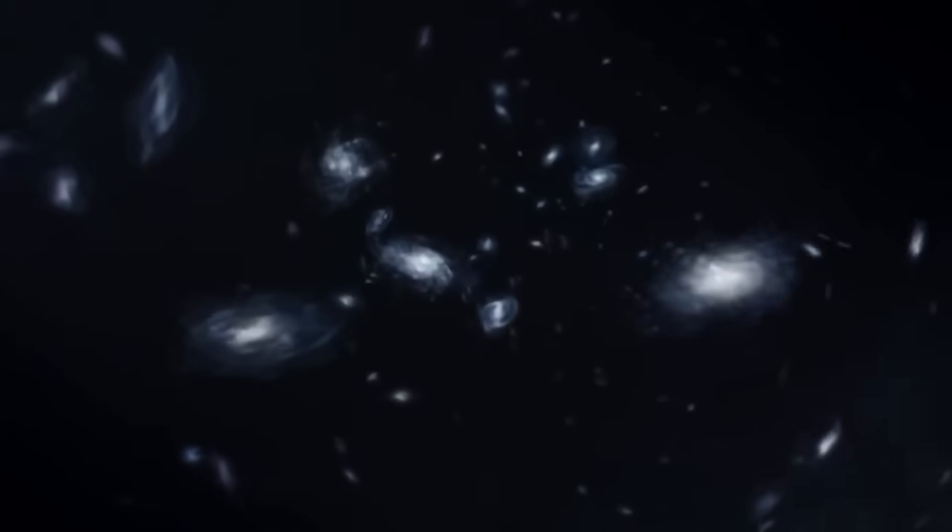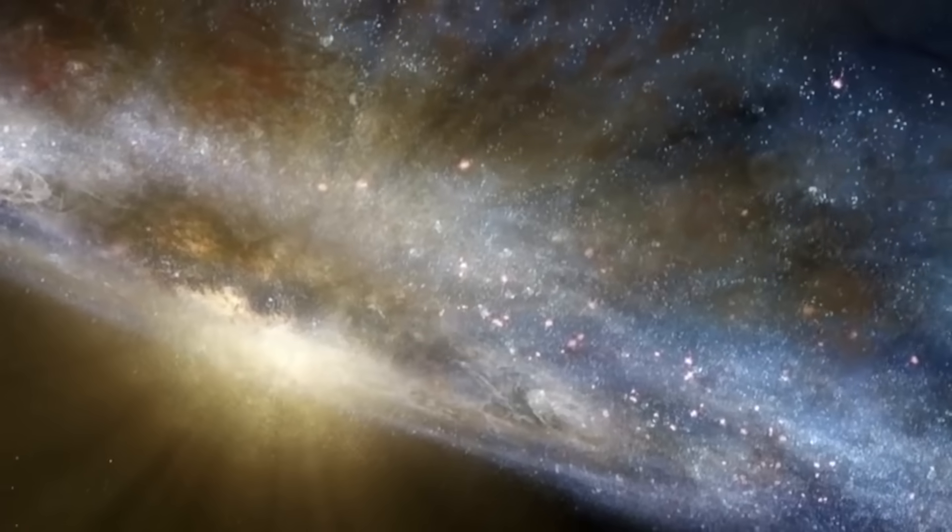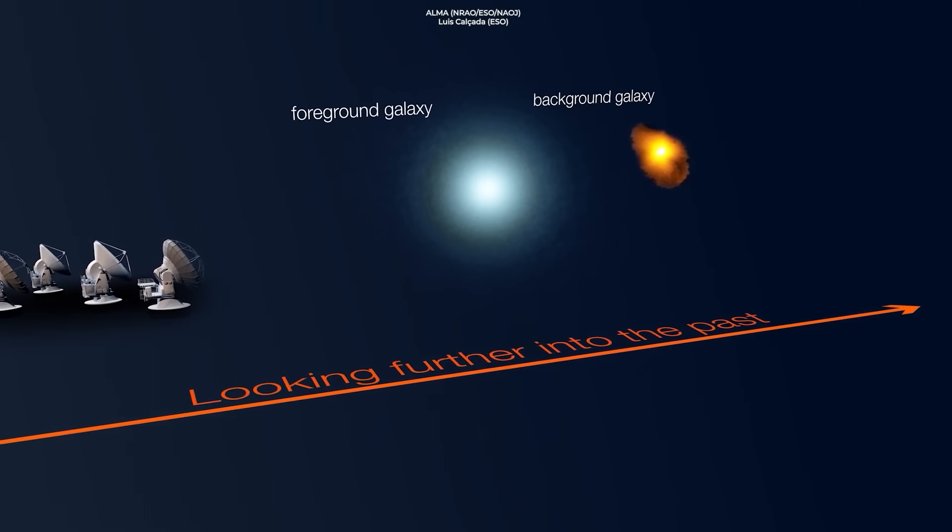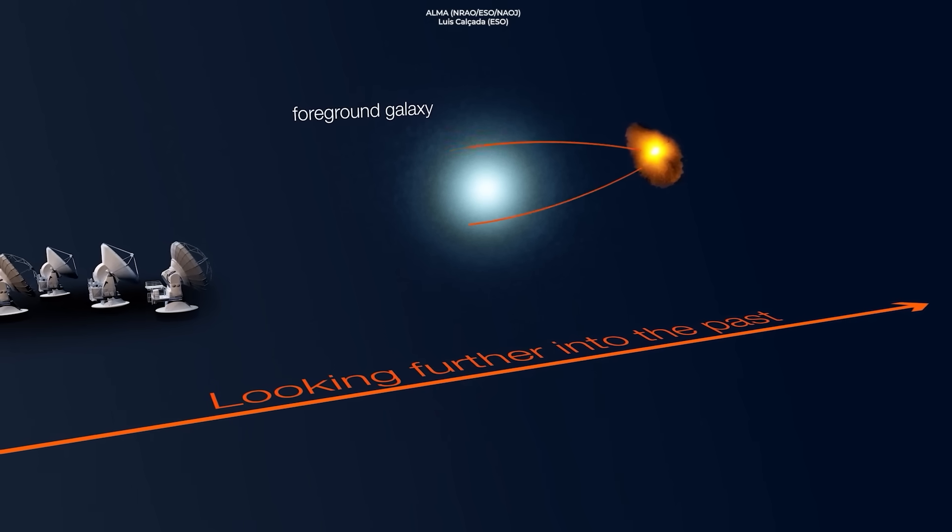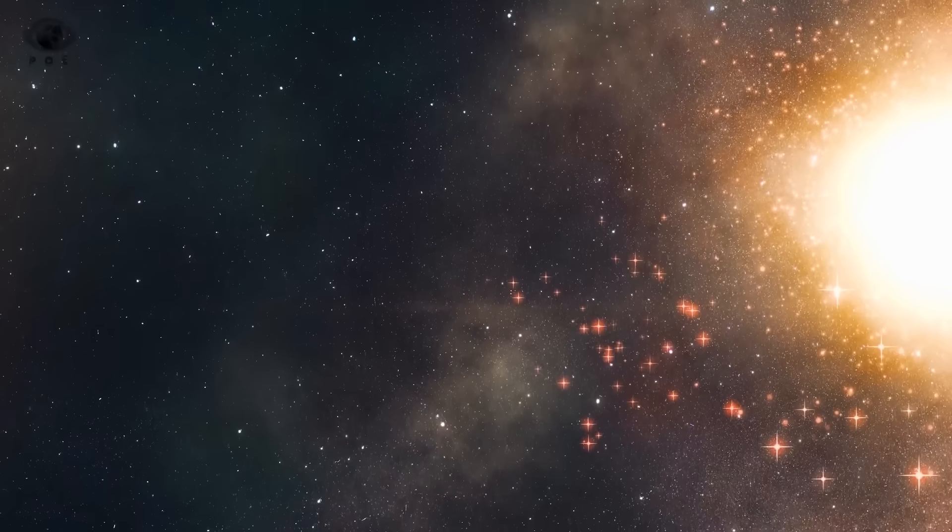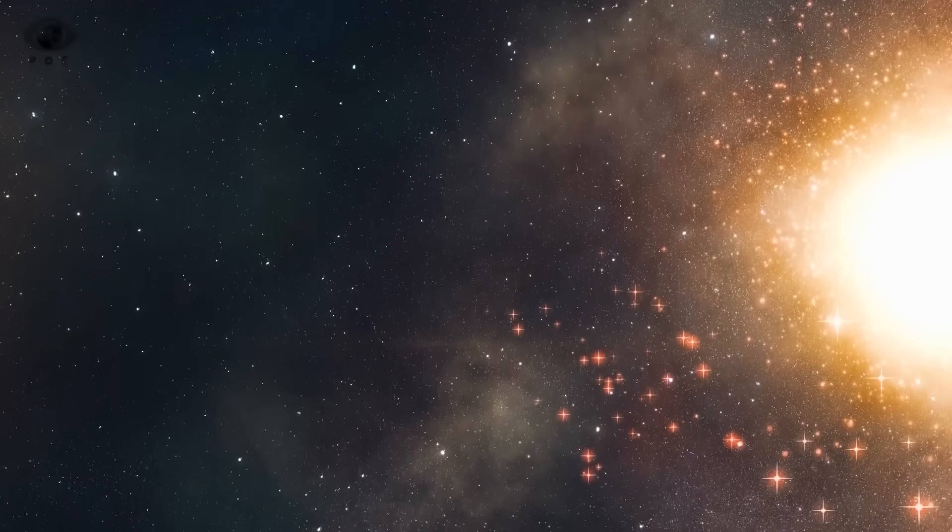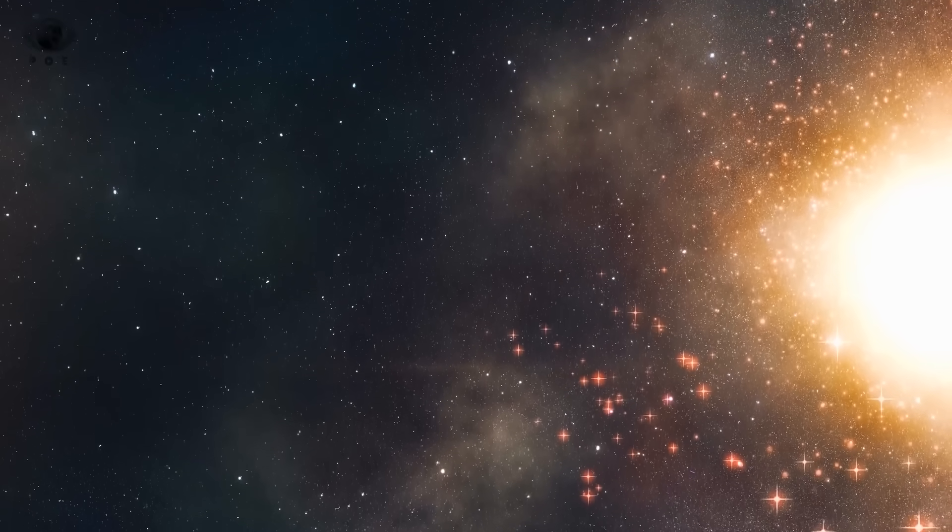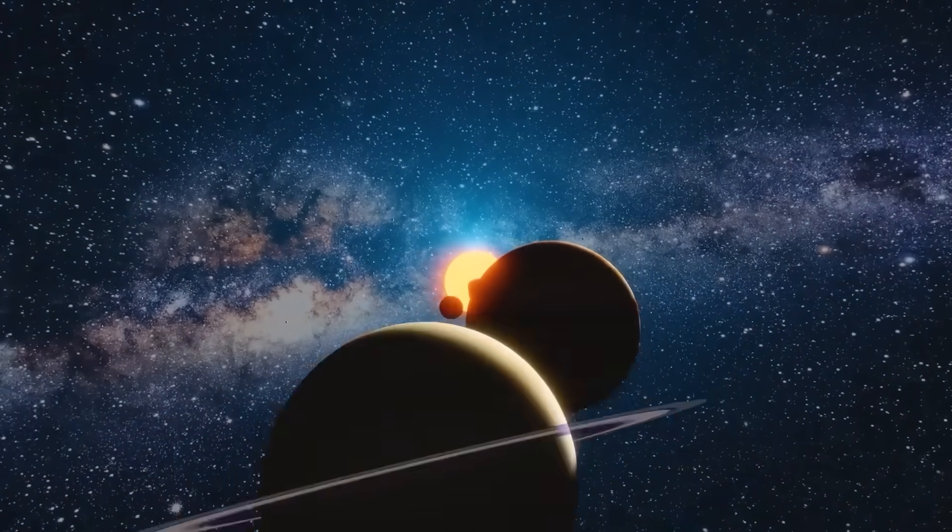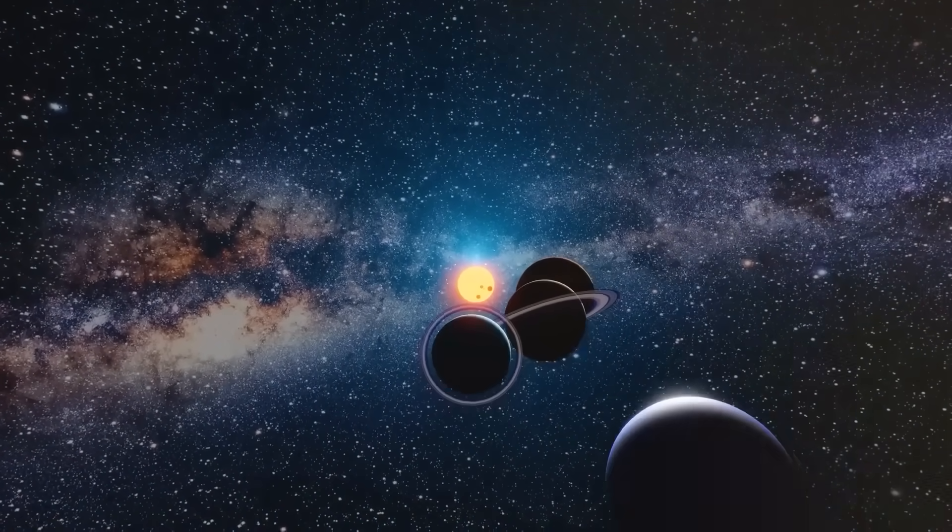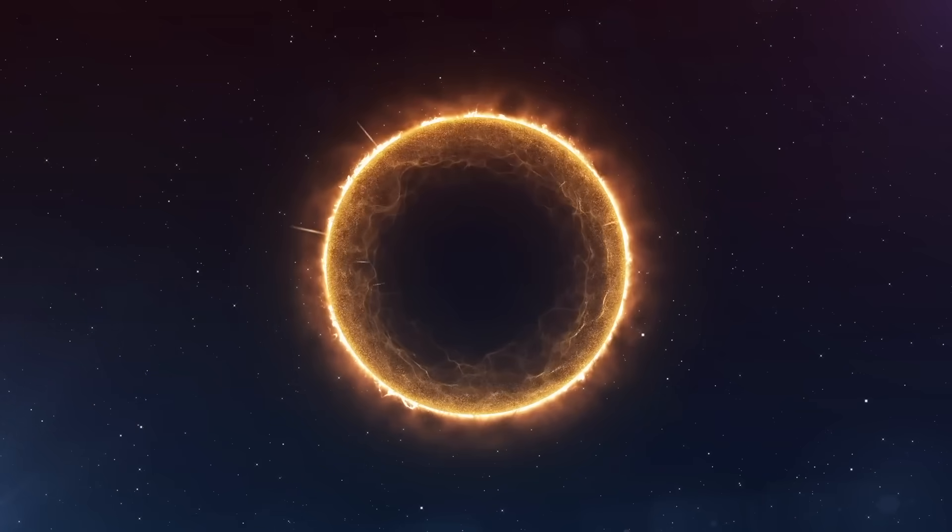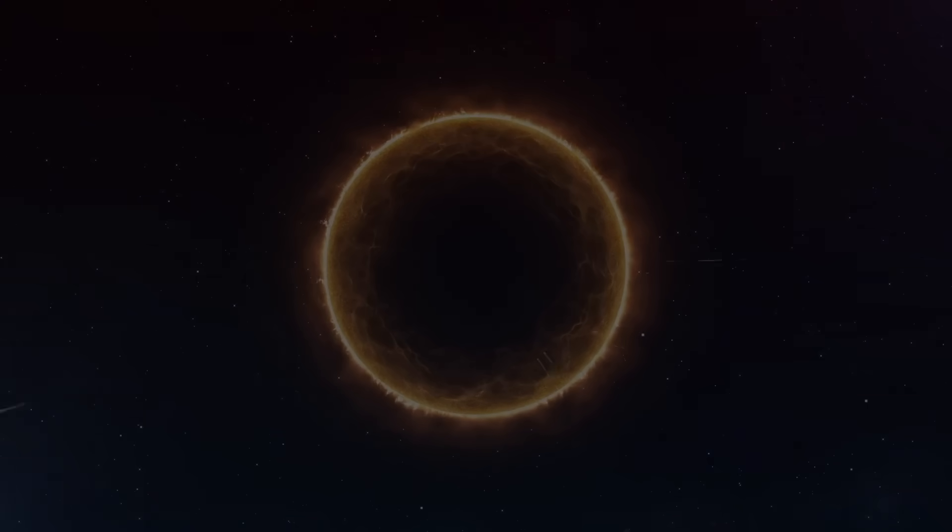For such an image to exist, the alignment between the two galaxies must be exact, down to fractions of a degree, across billions of light years. That's not just rare, that's statistically improbable on a cosmic scale. And while gravitational lensing is a known phenomenon, the degree of perfection here is raising far more questions than answers. Could this be a hint of some deeper symmetry embedded in space-time itself, a sign that the universe isn't as chaotic as we've assumed, but instead governed by a geometry we've barely begun to perceive?